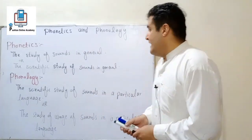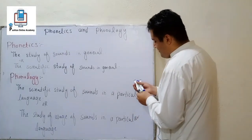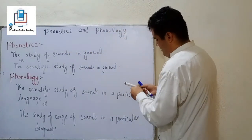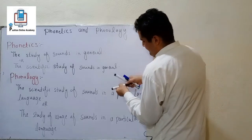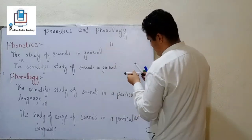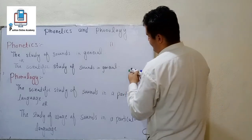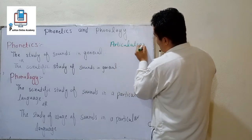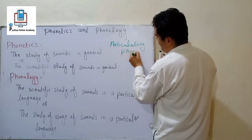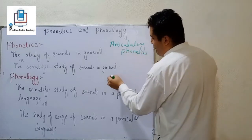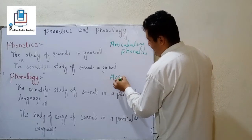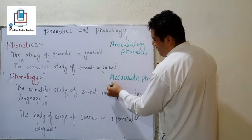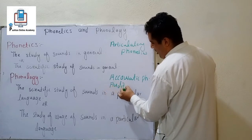Now here is an interesting thing. We divide phonetics into three branches. The first is articulatory phonetics, the second is acoustic phonetics, and the third is auditory phonetics.